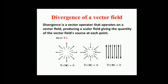In the second figure, the divergence of the vector field is negative since there is a compression as it moves towards the origin. In the third case, there is no expansion or compression of flux, so divergence is zero. As an example, consider air as it is heated or cooled — the velocity of the air at each point defines a vector field.